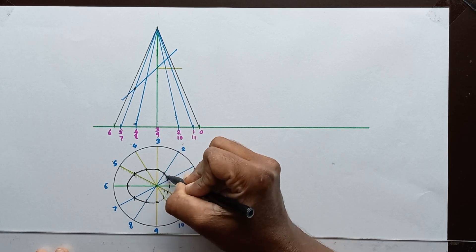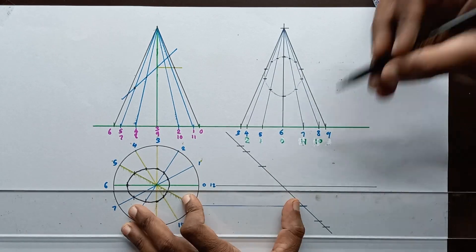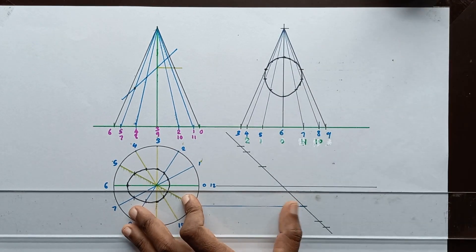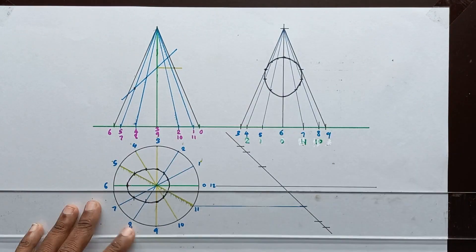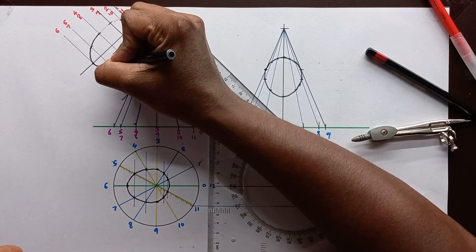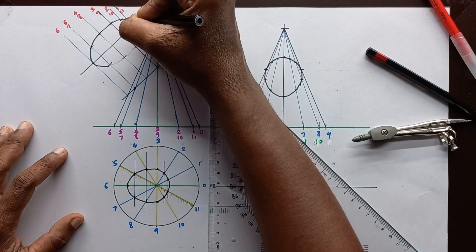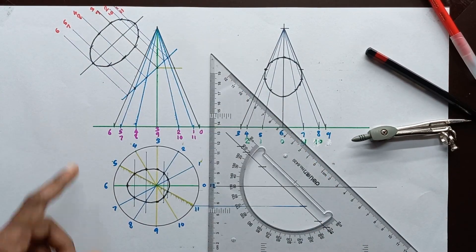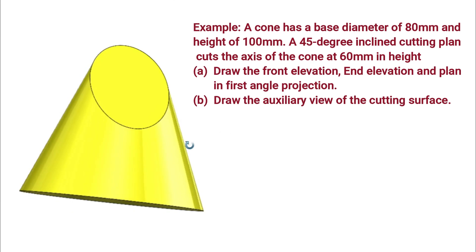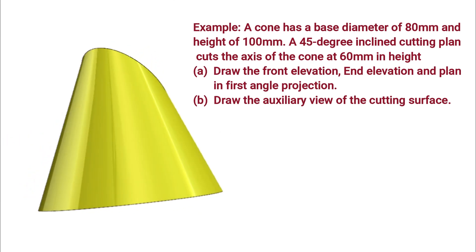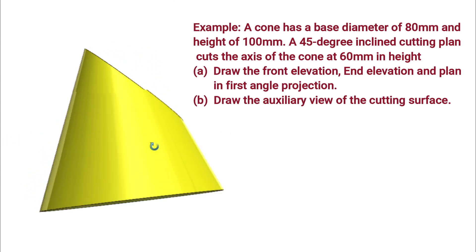In this video I am going to explain how to construct and draw three elevations of the truncated cone. I am also going to explain how to construct and draw the auxiliary view for the cutting surface, looking perpendicular to the cutting plane. To illustrate this, I am going to use this example.